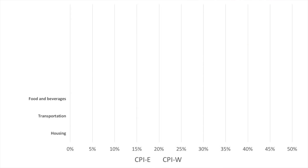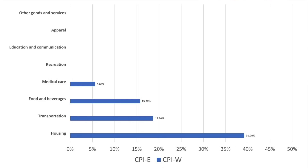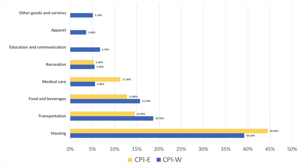Let's take a second and look at a side-by-side comparison of the differences in weightings between the CPI-W and the CPI-E. The print may be somewhat small, but stick with me. There are eight big categories that each of these indexes measure: housing, transportation, food and beverages, medical care, recreation, education and communication, apparel, and other goods and services. We'll illustrate the rough percentages the CPI-W uses in their weightings and then compare the differences with the CPI-E.